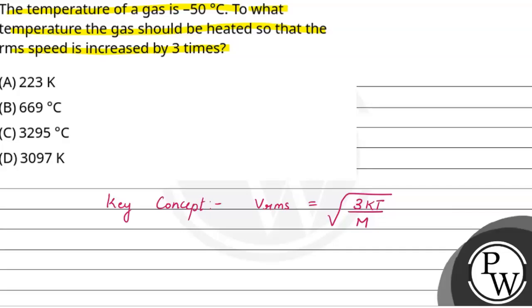यह velocity of individual gas molecules का square होता है. यहाँ पर k root mean constant होता है, इसकी value होती है 1.3 × 10^-23. Temperature minus 50 degree Celsius में दिया है. इसे Kelvin में convert करने के लिए 273 add कर देते हैं, तो value 223 Kelvin हो जाएगी.